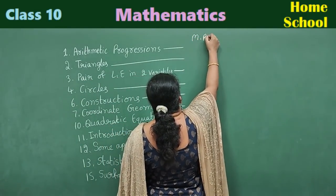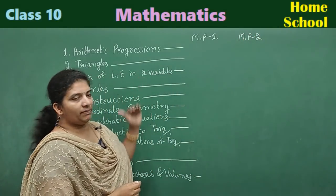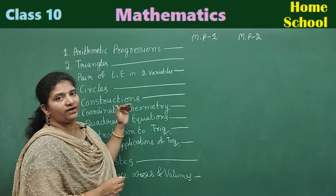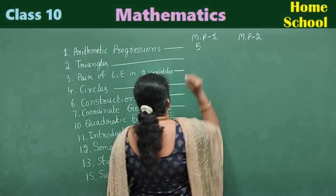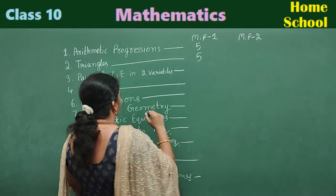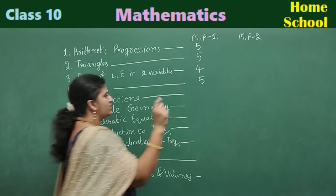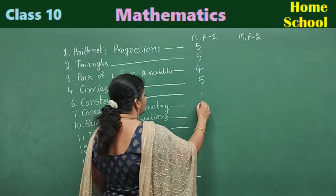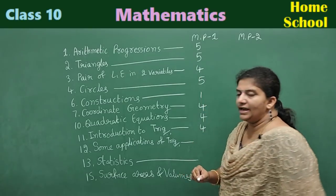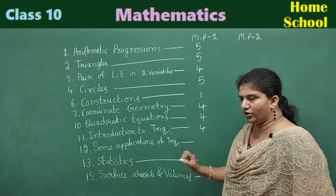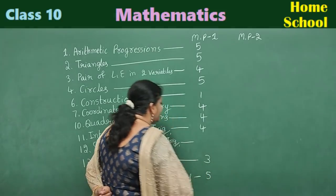In model paper one, the questions from each chapter were: Arithmetic Progressions — 5, Triangles — 5, Pair of Linear Equations — 4, Circles — 5, Constructions — only 1, Coordinate Geometry — 4, Quadratic Equations — 4, Introduction to Trigonometry — 4, and there was no question from Some Applications of Trigonometry. Statistics — 3, Surface Areas and Volumes — 5.